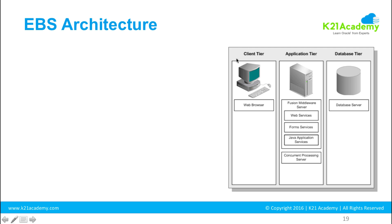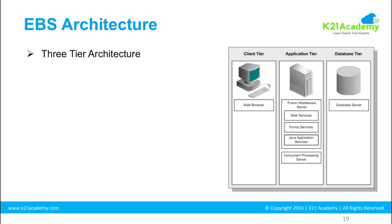The client tier is where end users are accessing the application. The application tier and database tier are logical conventions — logical naming for a group of services. These two tiers can be on different machines or on the same physical or virtual operating system machine. The application tier is also called the middle tier because it sits between the client and the database tier.